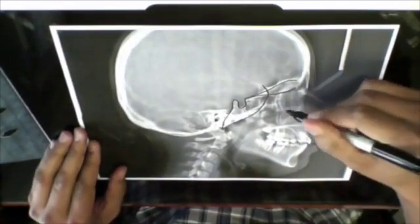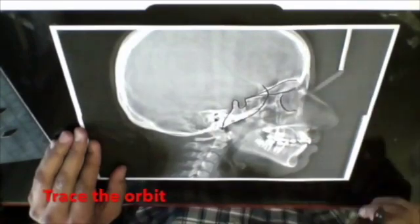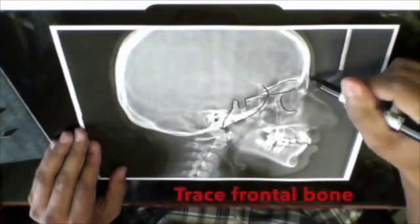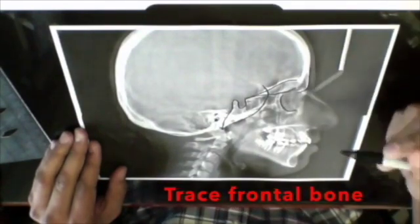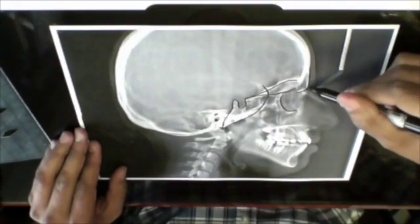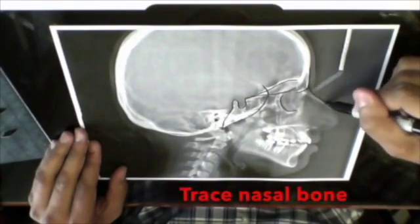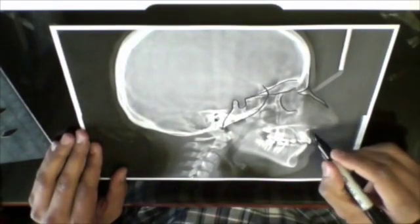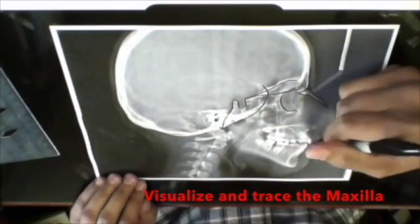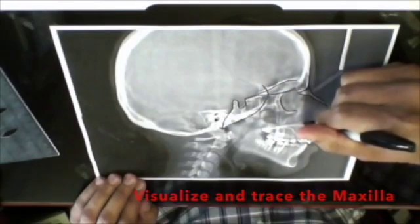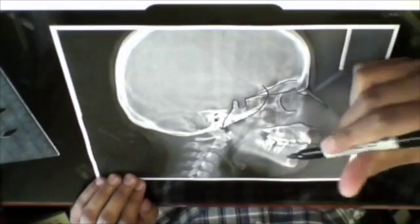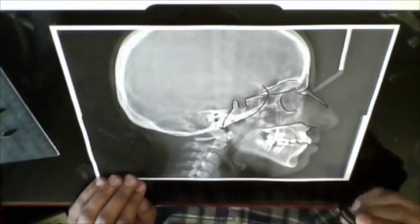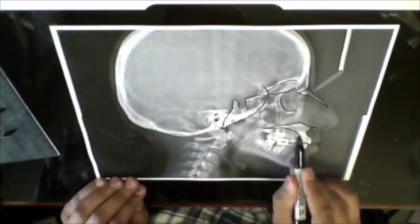You can then trace the orbit, the frontal bone including the frontonasal suture followed by the nasal bone, and then you can move on to the maxilla. I like to start from the anterior nasal spine moving on posteriorly until I get to the posterior nasal spine of the maxilla, and then trace the anterior curvature, the palate and the inferior portion of the maxilla.